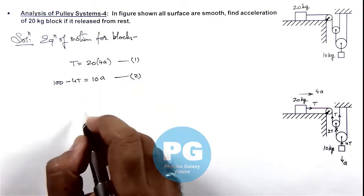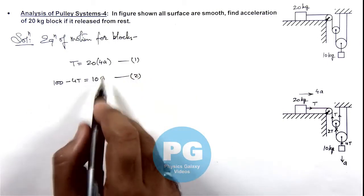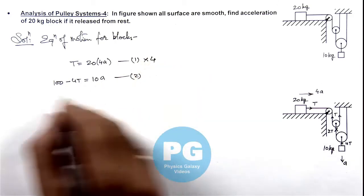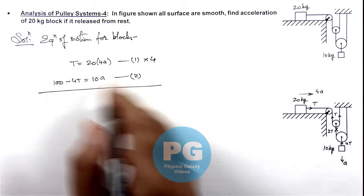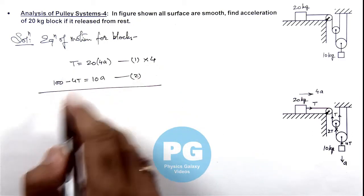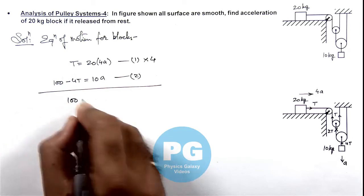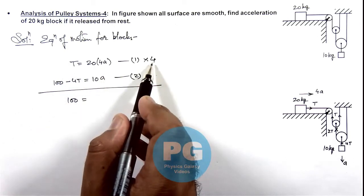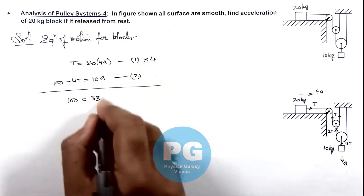Now to solve it, we need to eliminate T and get the value of ay, so we multiply by 4 and add the 2 equations. 4T and 4T gets cancelled out. On left hand side this will be 100 and on right hand side it is 320 plus 10, this is 330ay.